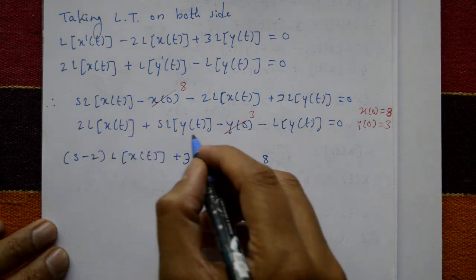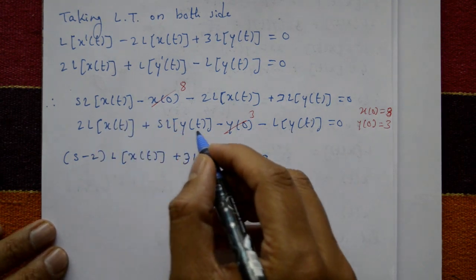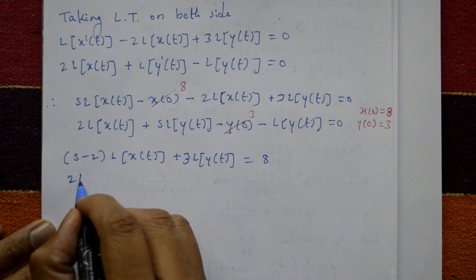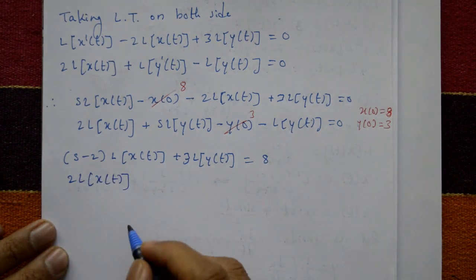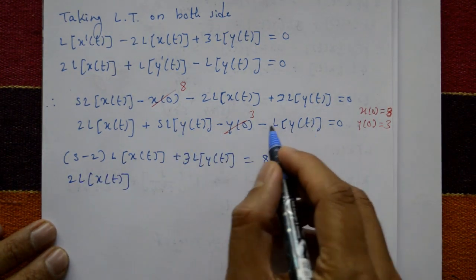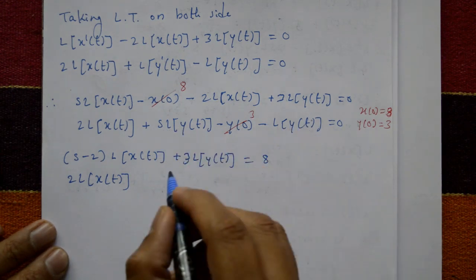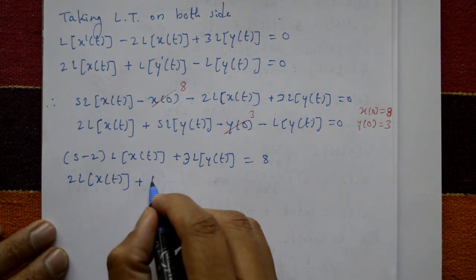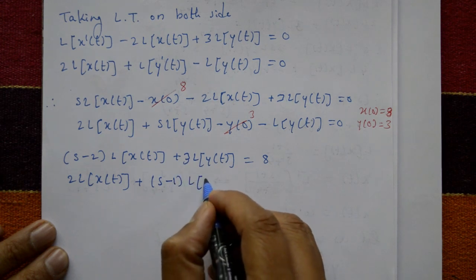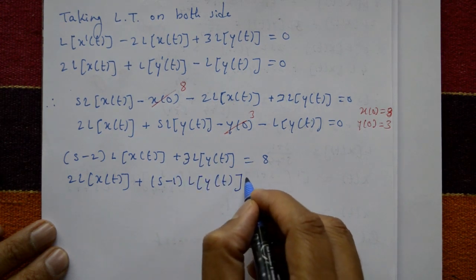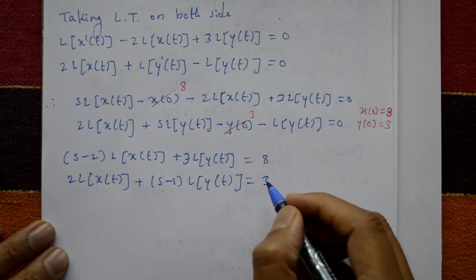The second equation becomes: 2·Laplace[x(t)] + (s − 1)·Laplace[y(t)] = 3.